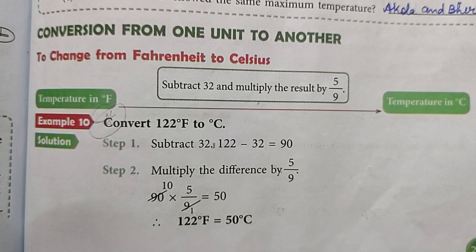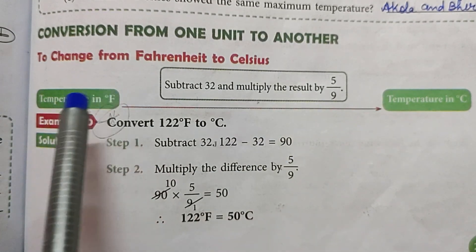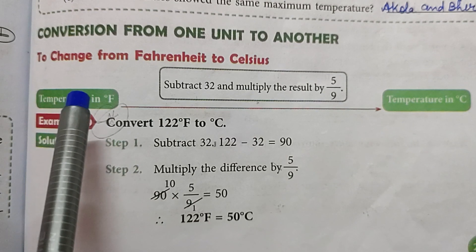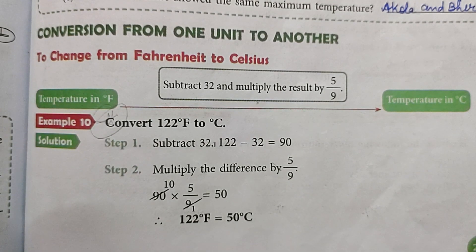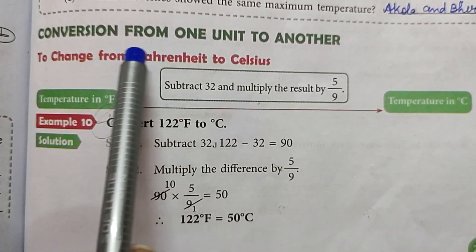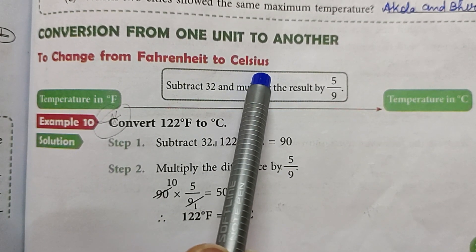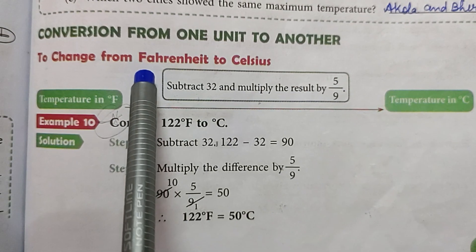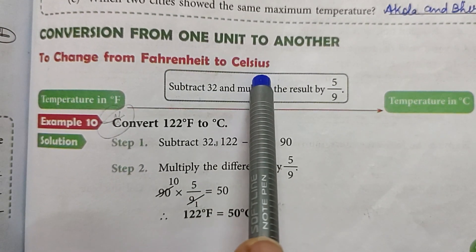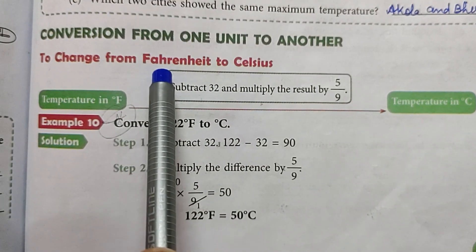Hello children, welcome back to my channel. In today's video we will discuss conversion from one unit to another. In our previous video we discussed about temperature and measurement of temperature, types of thermometer. Today we are going to learn how to change from Fahrenheit to Celsius and from Celsius to Fahrenheit. If we are given the temperature in Fahrenheit we will change it to Celsius, and if we are given Celsius we will change it to Fahrenheit.